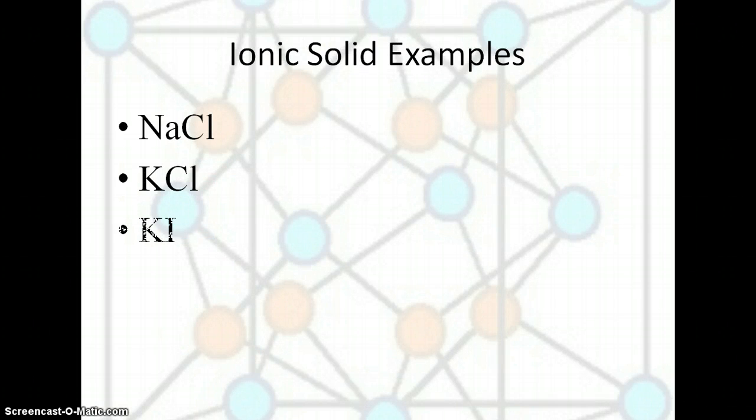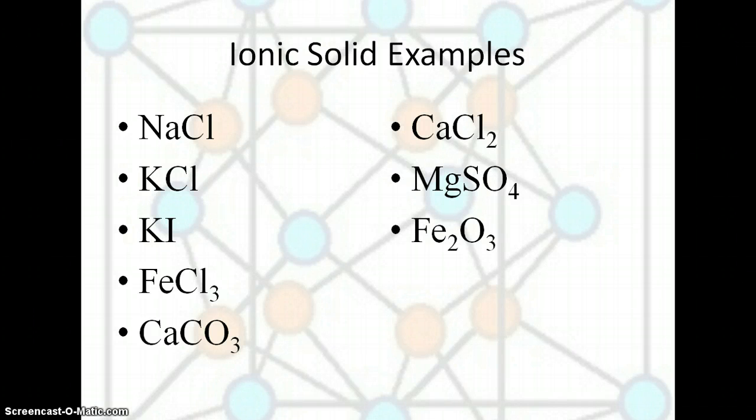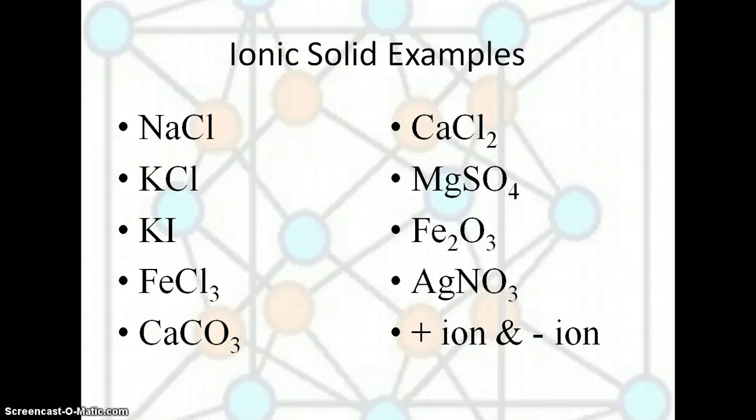Here are some examples of some ionic solids. We've got sodium chloride, potassium chloride, potassium iodide, iron 3 chloride, calcium carbonate. Remember, polyatomic ions do participate in ionic bonding, even though the polyatomic ion itself is covalently bonded. Then you have calcium chloride, magnesium sulfate, iron 3 oxide, silver nitrate. Any positive and negative ion is going to give you an ionic solid.